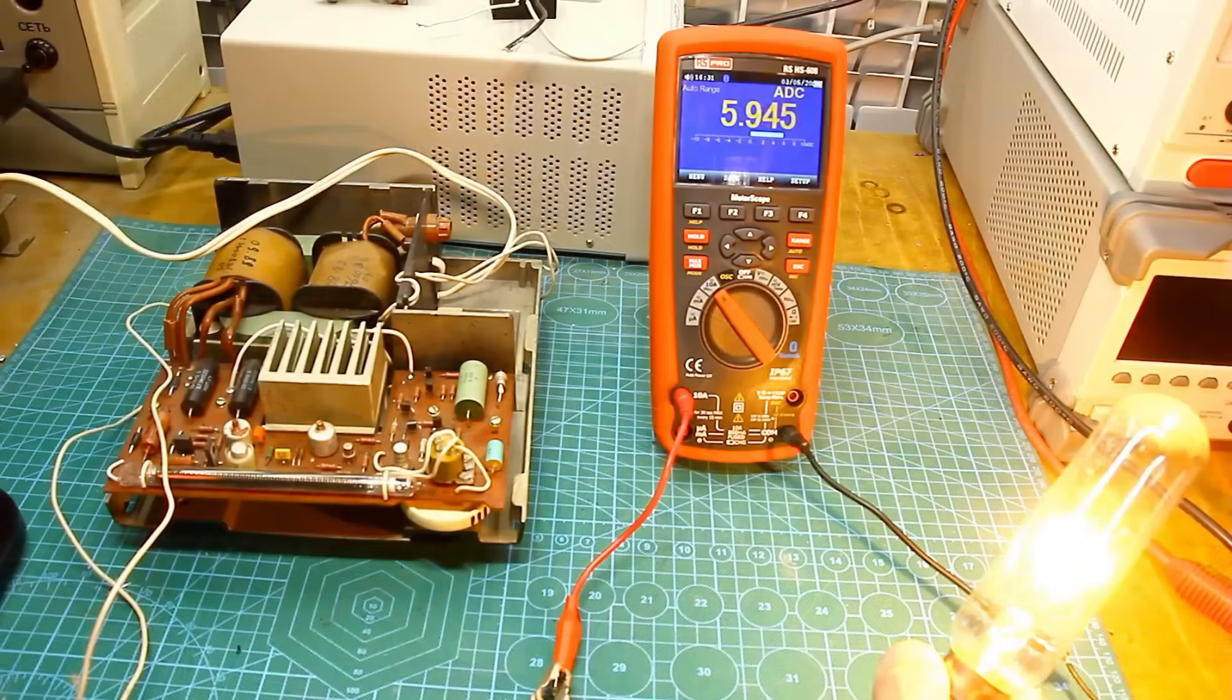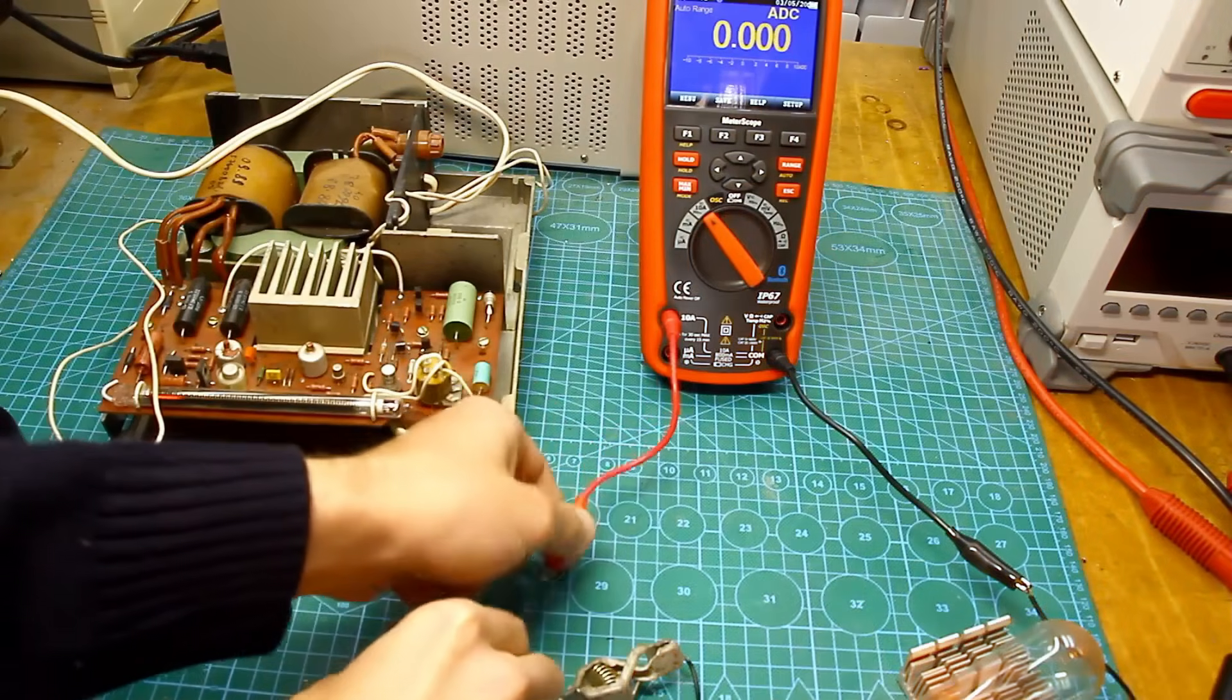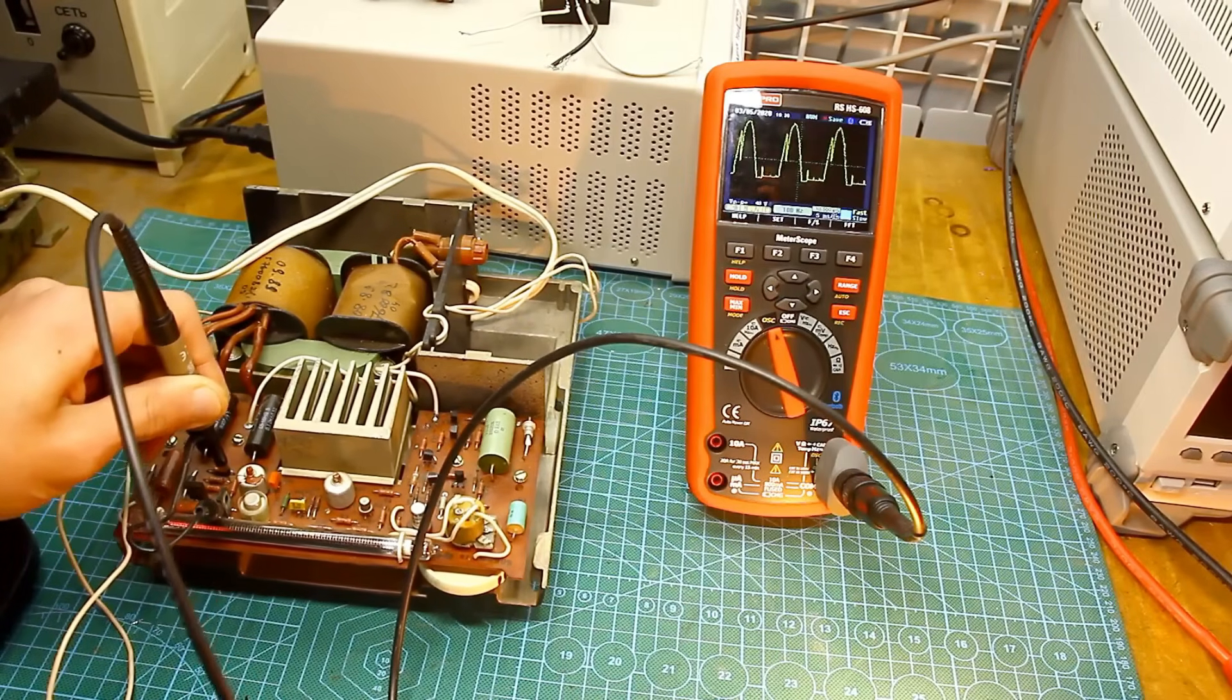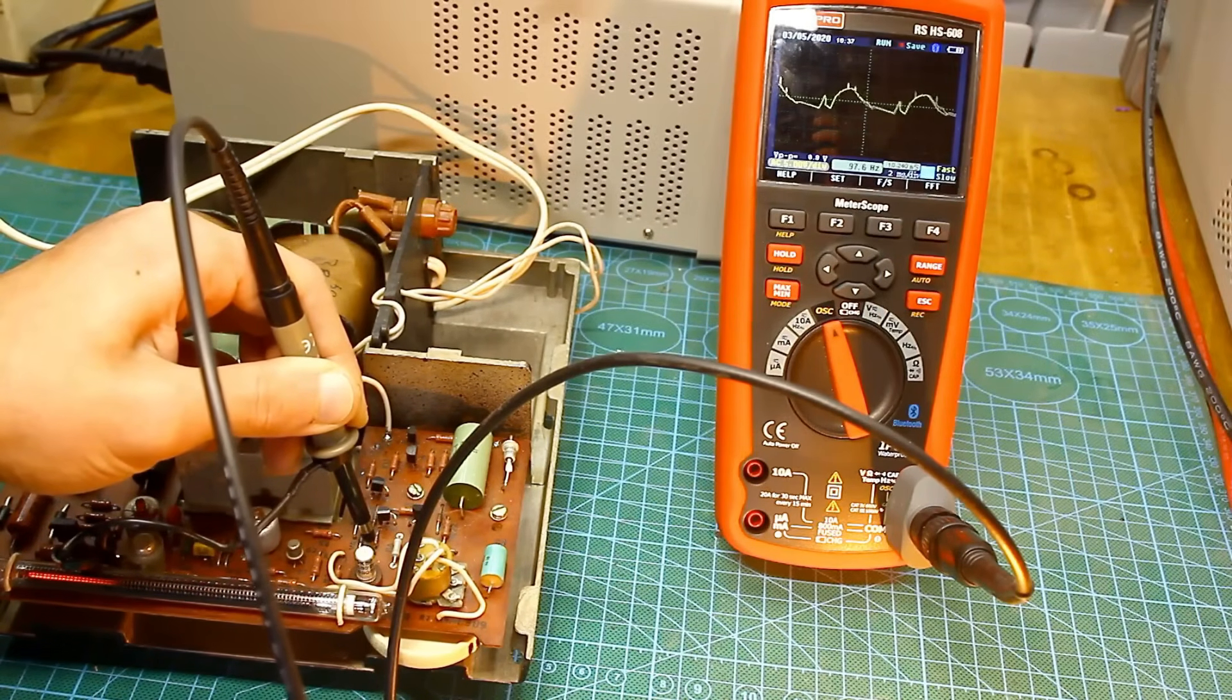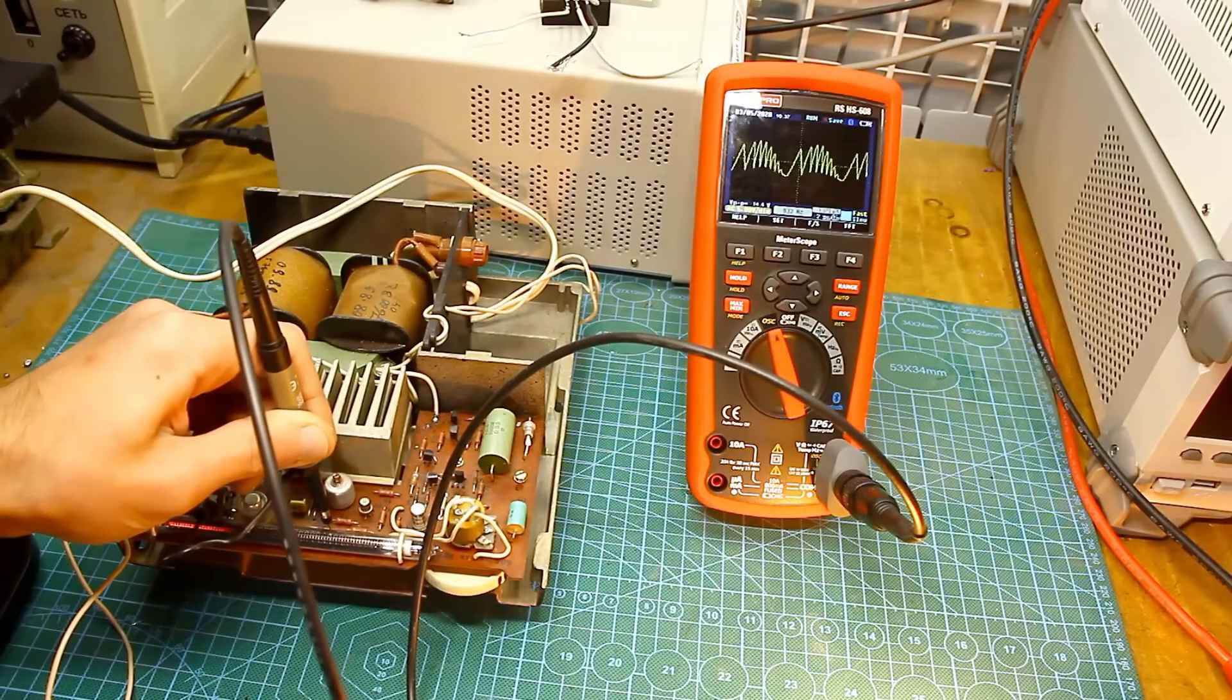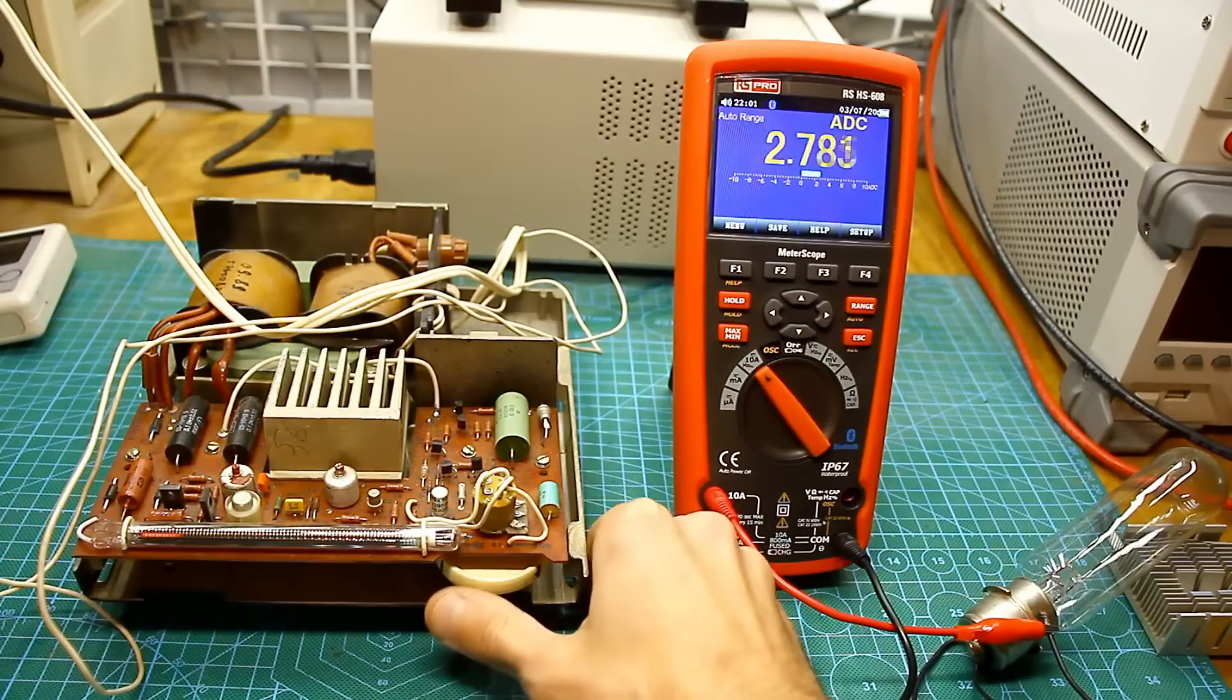First, we switch the multimeter to ammeter mode and load the output of the charger with an incandescent lamp. Set the current to 6 amps. Then we remove the ammeter from the circuit, switch the multimeter to oscilloscope mode, and compare the waveforms with those specified in the instructions. Everything seems to be fine, meaning there are no issues with the operation. The current adjusts smoothly to 6A.